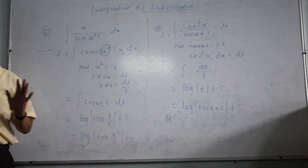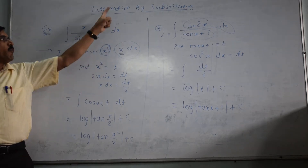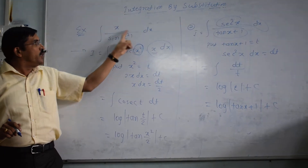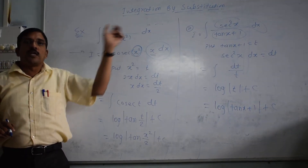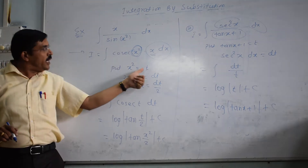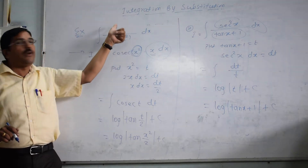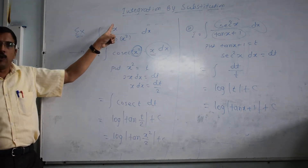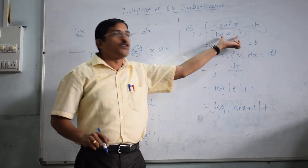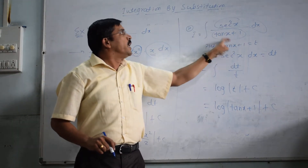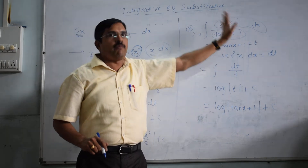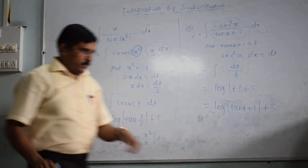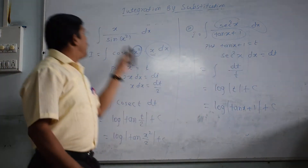In substitution, when solving integration with the help of substitution, you need to see the part or function whose derivative is present. You have to put t or any variable for this part whose derivative is present or can be obtained. In example one, we used t for x² because its derivative x was present. In example two, we used substitution for tan x + 1 because its derivative is present at the numerator.